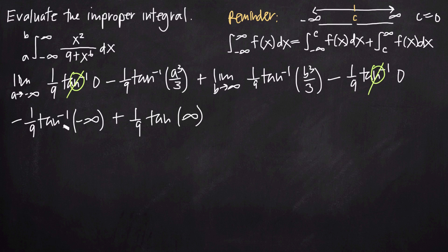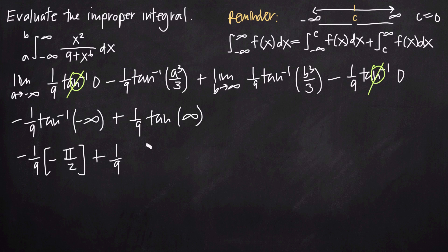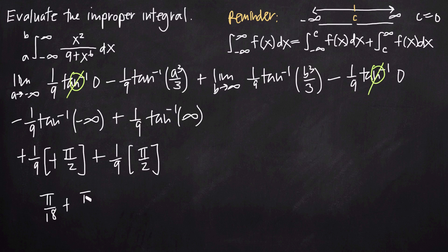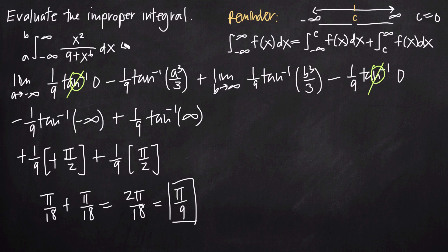Looking at the inverse tangent function, as we approach negative infinity, arctan approaches negative pi over 2. As we approach positive infinity, arctan approaches positive pi over 2. So we get negative 1 ninth times negative pi over 2, plus 1 ninth times positive pi over 2. The negatives cancel, leaving pi over 18 plus pi over 18, which equals 2 pi over 18, or simplified, pi over 9. Since we got a real number, this integral converges to pi over 9.